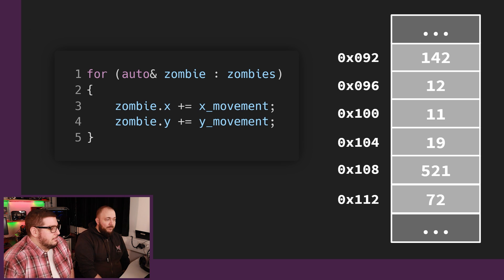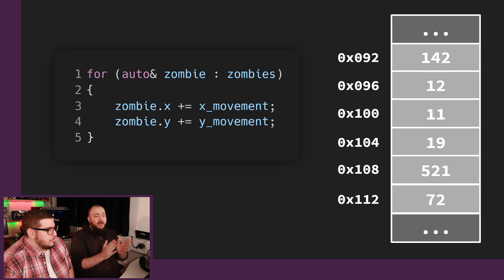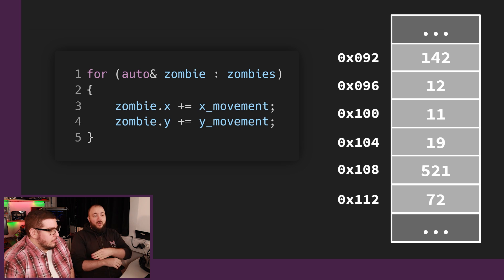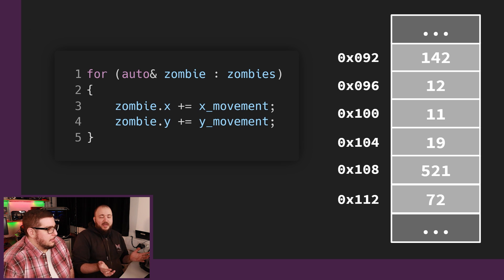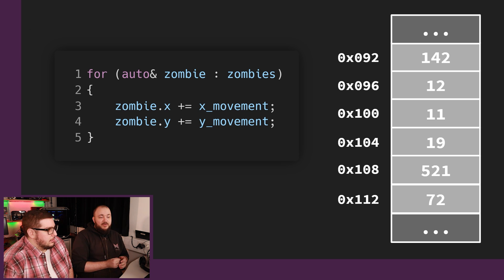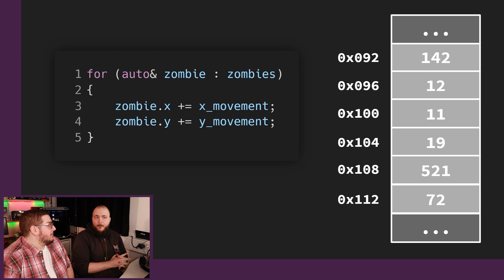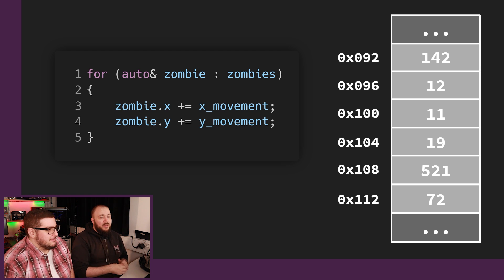For every zombie in the list or container called zombies, I want to update X by the X movement and the Y by the Y movement. So you can imagine that a lot of code is behaving this way. We have a collection of things and you'd like to go through it — go through all the zombies, all the players, whatever the thing is. That's a more common behavior. Less common behavior is going all over the place in memory. You're very predictable in your actions — we don't want to create gaps.